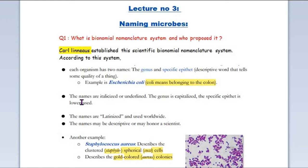Number two is the rule: the scientific name is italicized. If you don't want to write it in italics form, then you can underline it.